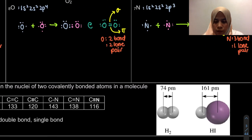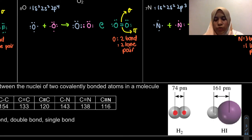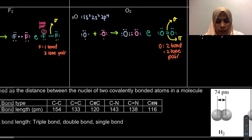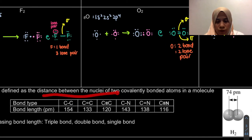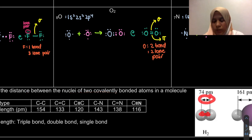For example, for a hydrogen molecule, the center of one hydrogen atom is the nucleus, and here is the center — the nucleus — of the second hydrogen atom. The distance between the two nuclei is what we call the bond length.